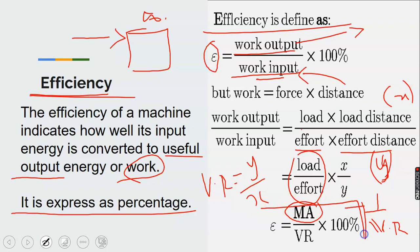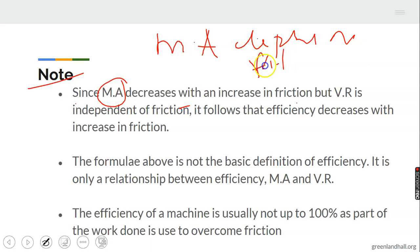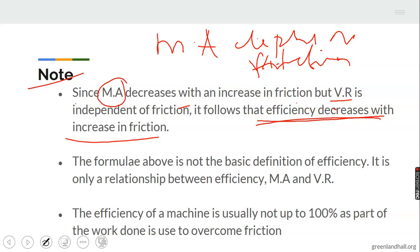So efficiency equals mechanical advantage over velocity ratio times 100%. This is the formula for calculating efficiency of any machine. Note: mechanical advantage decreases with increase in friction, but velocity ratio does not depend on friction. Efficiency also decreases with increase in friction — when friction increases, efficiency decreases.